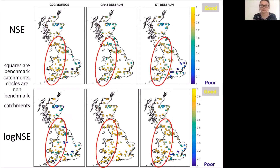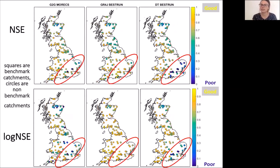Secondly, all models perform better in the west of the country — generally wetter catchments — which isn't overly surprising. The best model results are found in the west of England and Wales. Finally, the biggest model differences are really found in the southeast, where Grid-to-Grid and dynamic top model tend to struggle in reproducing observed flows, whereas GR4J does very well in these catchments.